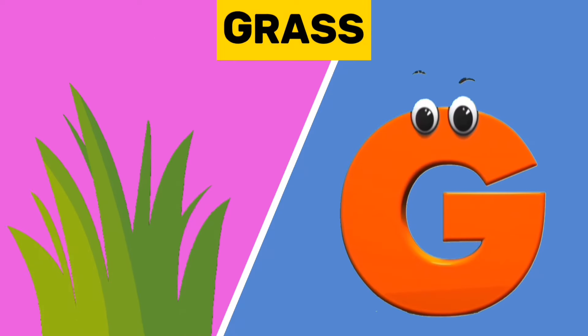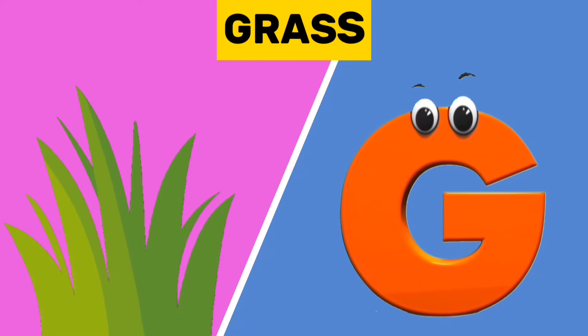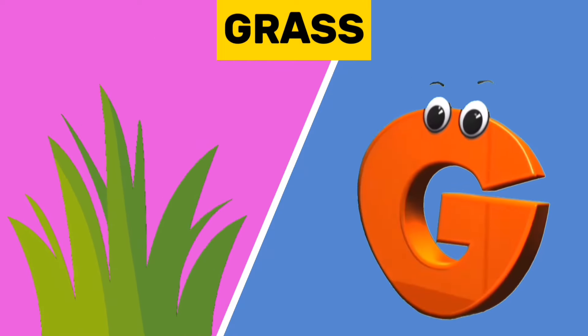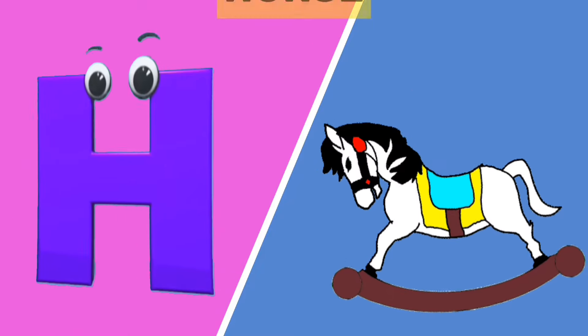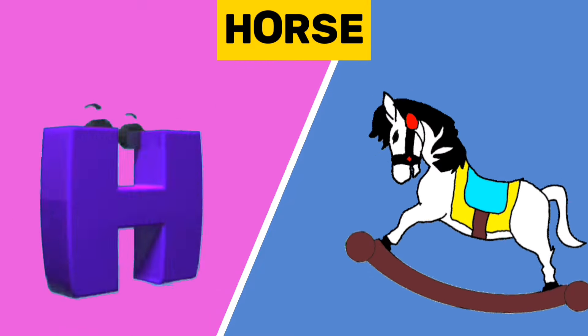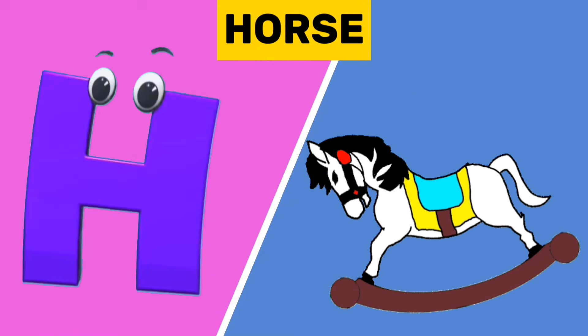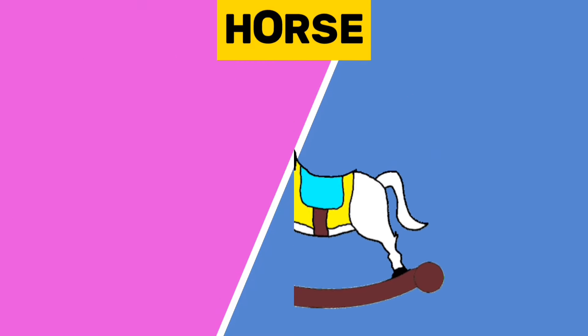G is for grass. G, g, grass. H is for horse. H, h, horse.